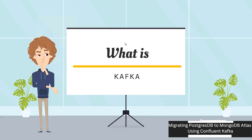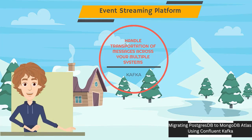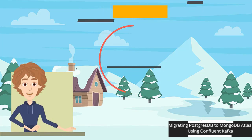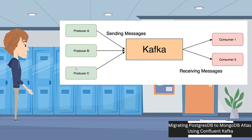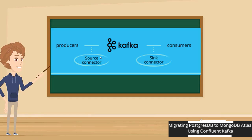So let us first try to understand what Kafka is. Kafka is nothing but an event streaming platform which handles transportation of messages across multiple systems. Imagine Kafka as a post office — just like you deliver letters to a post office, Kafka receives and sends messages on the internet from multiple systems. There would be certain producers which will produce messages into Kafka and certain consumers which would read the messages from Kafka. To read and write these messages, Kafka uses something called connectors. There will be source connectors which pull in data from the producers and write into Kafka, and sync connectors which receive messages from Kafka and send them to consumers.